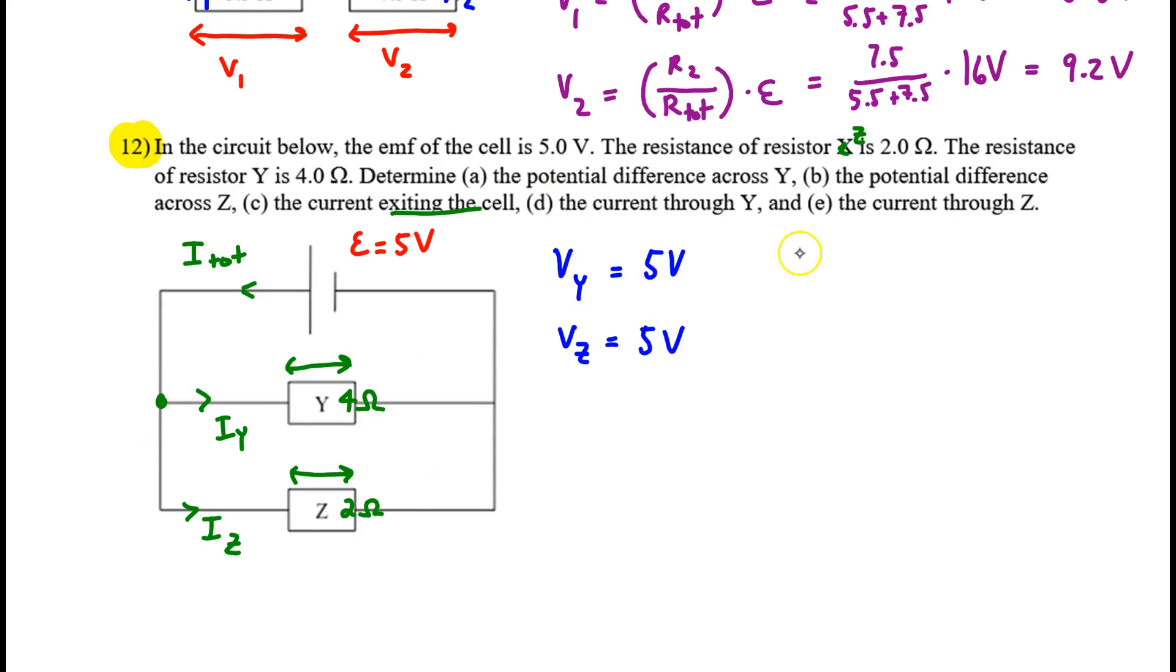Now to find the current. If we take the equation I times R, we could rearrange. And for current, what we get is I equals V over R. Let's apply that to resistor Y, and then we'll apply it to resistor Z. We know the potential difference across Y is 5. We know the resistance of Y is 4. Dividing, we get 1.25 amperes. We do the same thing down below. Z is in parallel with Y, so they have the same potential difference, 5 volts. But Z has less resistance, only 2 ohms. When we divide, we get 2.5.